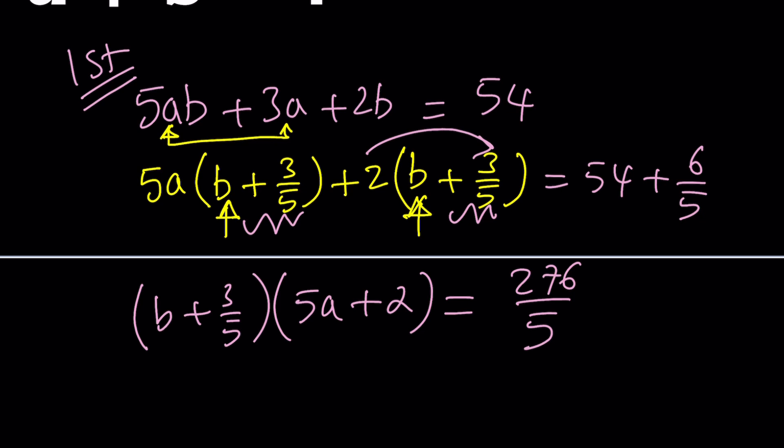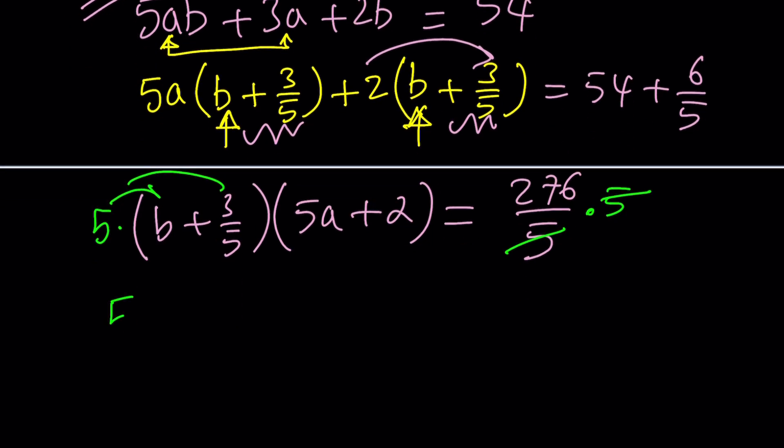Of course, we're going to get rid of the fraction, so don't worry about it. We're going to multiply both sides by 5 and that's going to get rid of the 5 here. And when you distribute the 5 here, you will be getting 5a + 2. I want to write the a first. Multiply by 5b + 3 equals 276. So this is the most critical part. By doing all these things, you're getting a nice equation in the factored form. Now what would happen if you wanted to do this a little differently?